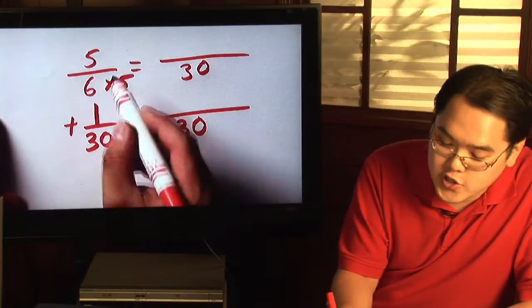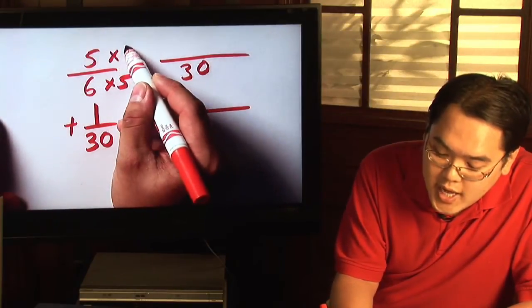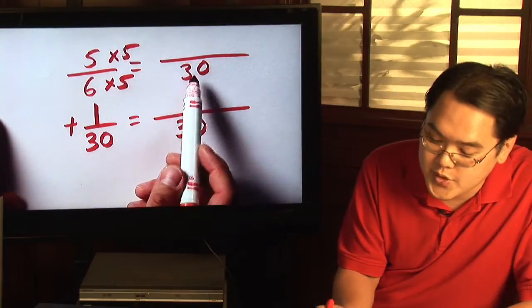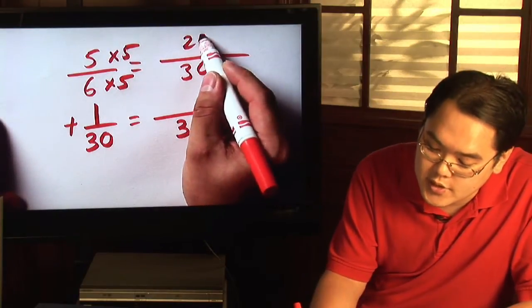Now, in order for adding fractions, you have to multiply the bottom and the top by the same number. So, six times five is thirty. Five times five is twenty-five.